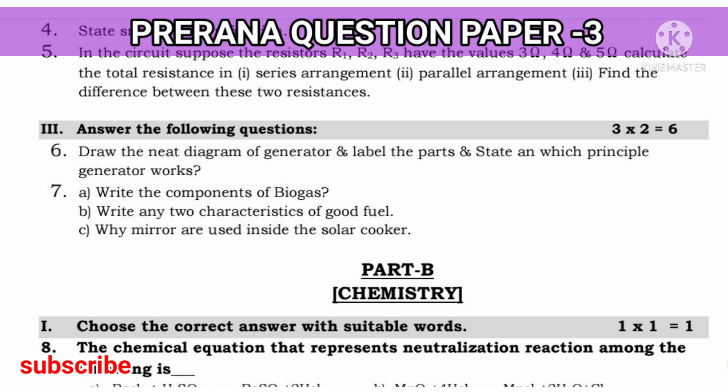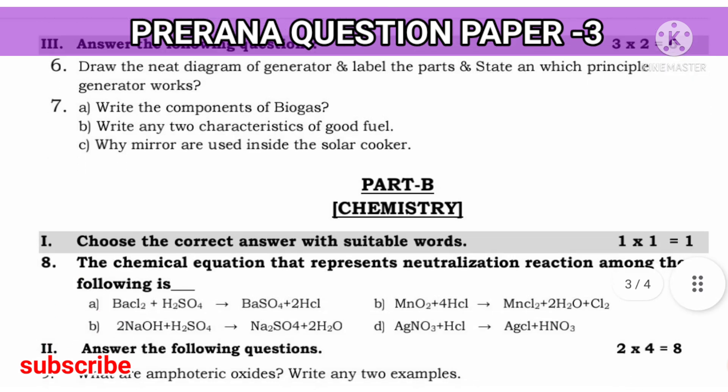Next, why mirrors are used inside a solar cooker? You know about this also. Why are mirrors used? Because it absorbs maximum sunlight which is incident on it. And it focuses and carries the very powerful thermal energy. So that's why mirrors are used in the solar cooker. This is all about physics. Very important, you should solve this question paper.